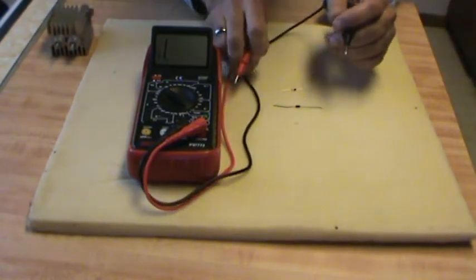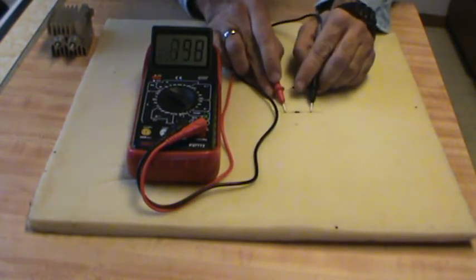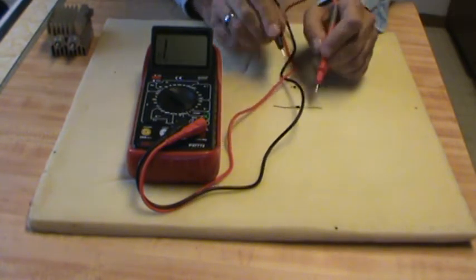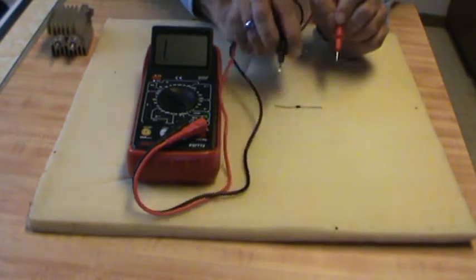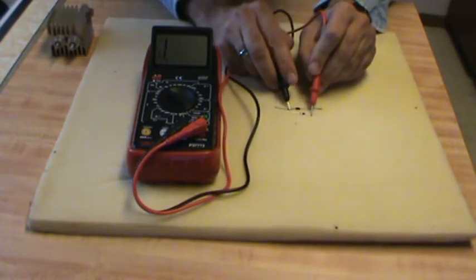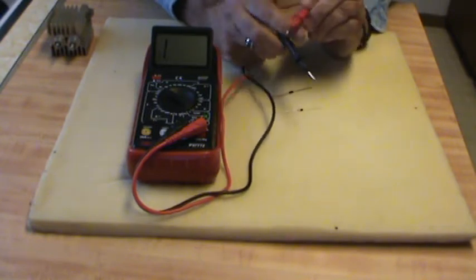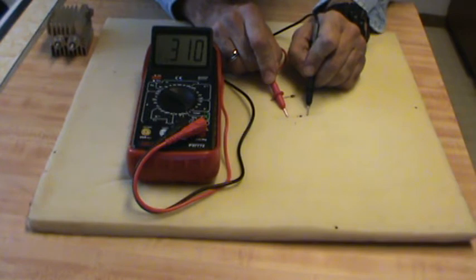What you're going to do is measure the current flow one way, which on here is six tenths of a volt drop. And you're going to measure the current flow the other way, which is zero. And that diode is presumably good. Like that diode there shows no voltage drop one direction, and the other direction it shows a voltage drop.